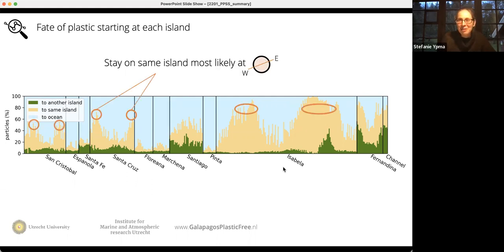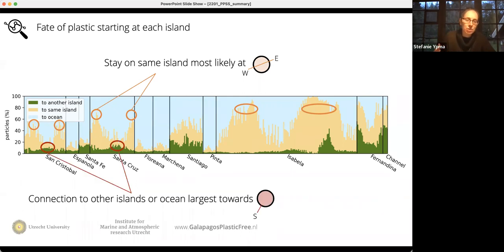You can go even a bit further looking at whether there are some trends for all the islands on whether it stays on the same island. That's more on the eastern and western side of islands, or whether it is connected to other islands or to the ocean, which is mainly on the southern parts, at least for San Cristobal and Santa Cruz. So it doesn't add up for all the islands. We're working on making this into a nice map so it's more easily interpretable what the main flow patterns are.